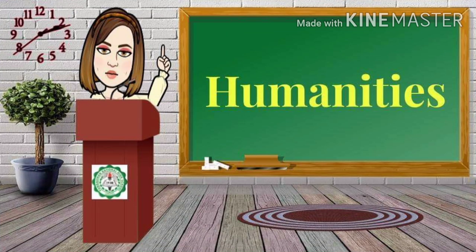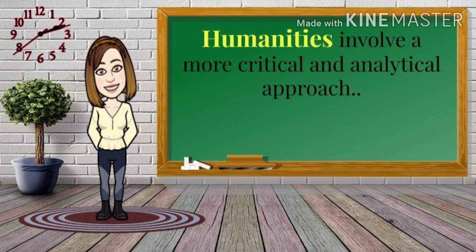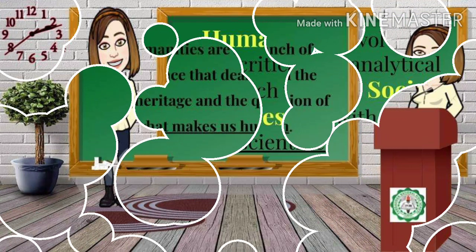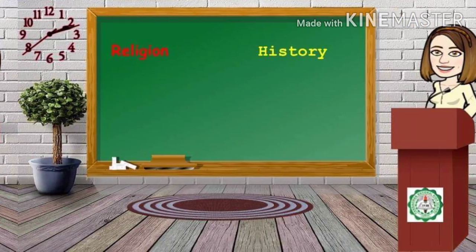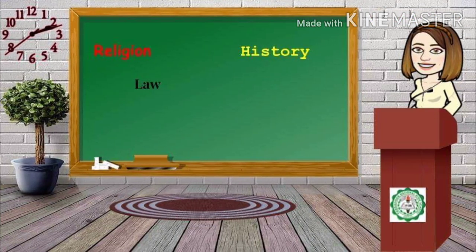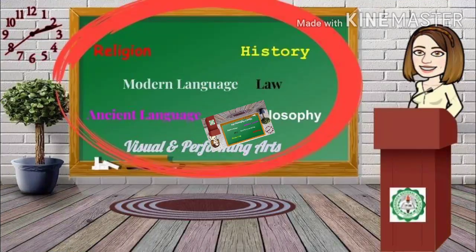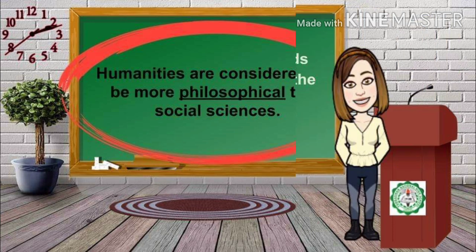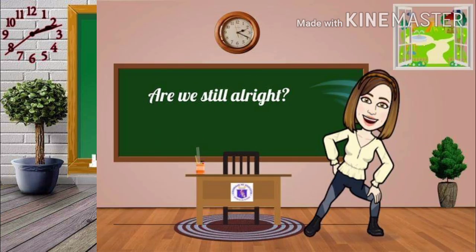Humanities is kind of equal and not equal to social science. Humanities involve a more critical and analytical approach, while social science deals more with a scientific approach. Humanities are a branch of science that deals with heritage and the question of what makes us human, such as religion, history, law, modern language, ancient language, philosophy, and visual and performing arts. These disciplines of humanities are considered to be more philosophical than social sciences, requiring devotion to the study of the fundamental nature of knowledge, reality, and existence.